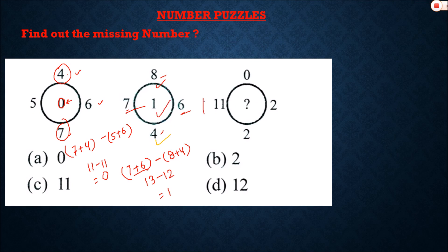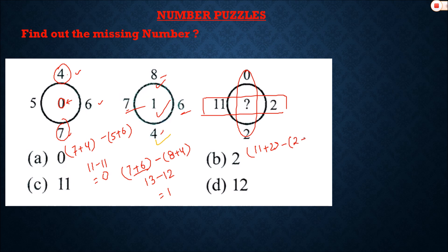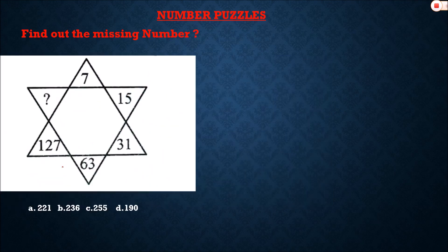Applying the same logic to the third circle: add 11 plus 2 to get 13, then subtract 0 plus 2 equals 2. So 13 minus 2 equals 11. Note: you should never get a negative value in a missing number problem. Option C is the correct answer for question number two.